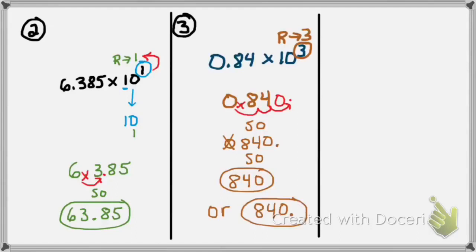Remember, if the last thing on my number is a decimal and it's a whole number, the ending decimal is optional.